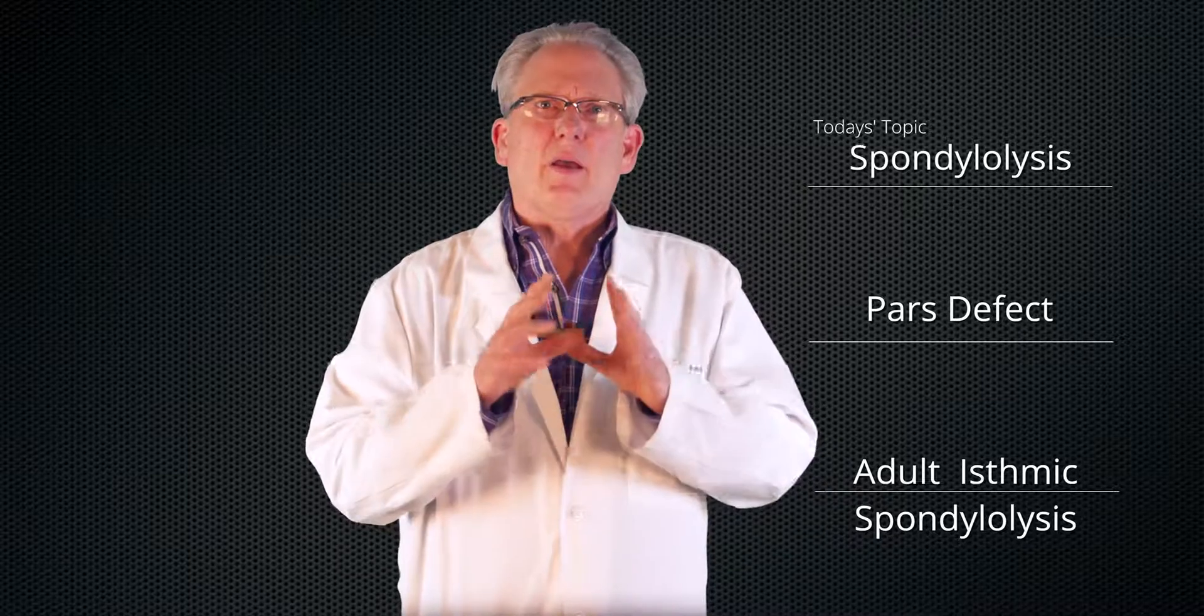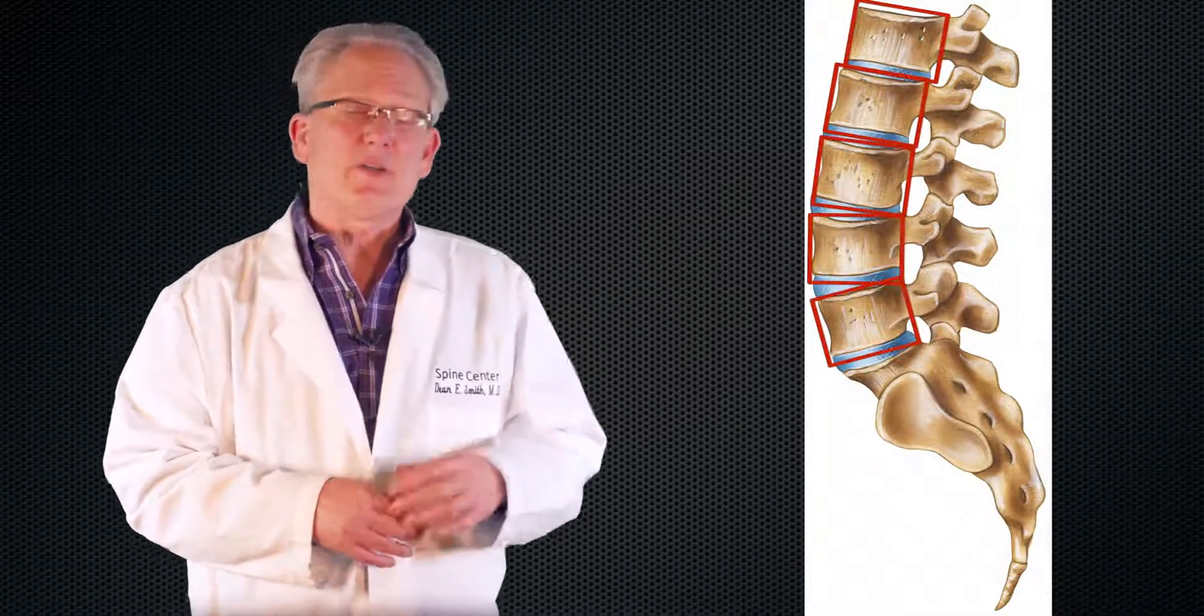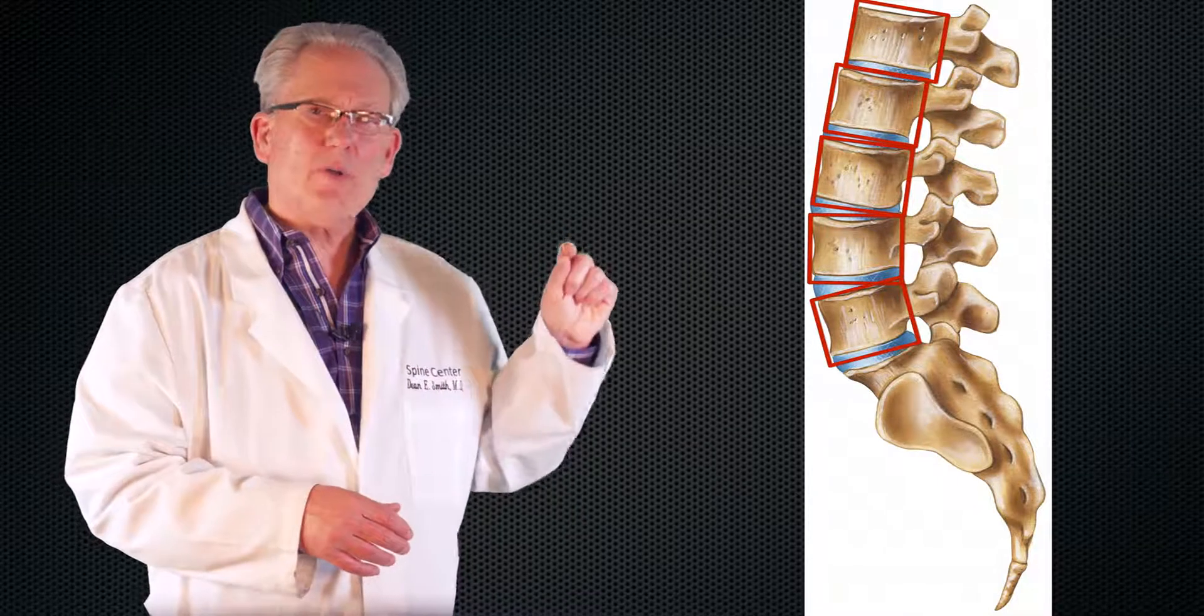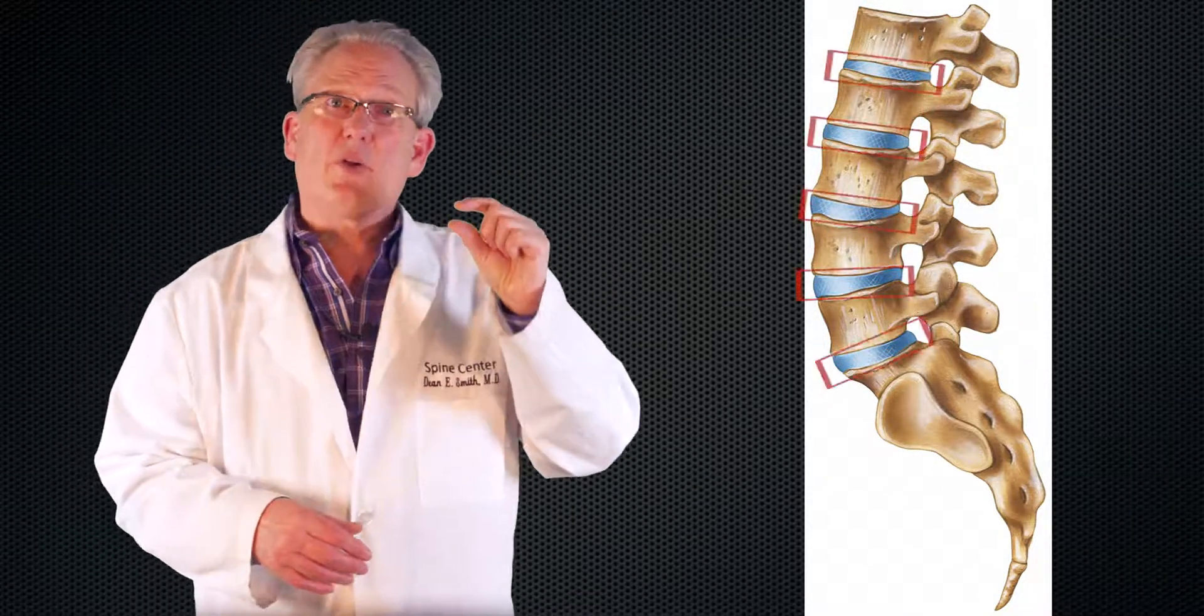But before I explain what spondylolysis is, I'm going to go over the anatomy of the lumbar spine briefly. The lumbar spine is composed of five vertebral bodies, and when you look at these from the side, they look like boxes. Each one of these bones is separated from the bone above and below it by a cushion or a disc.